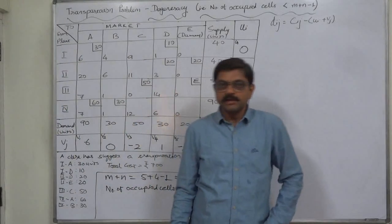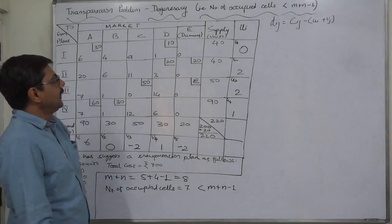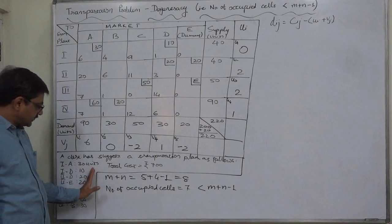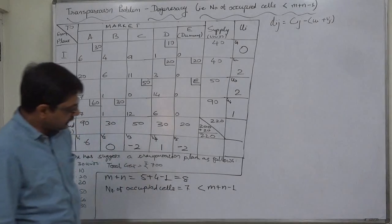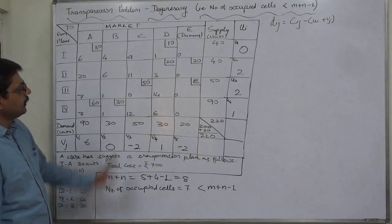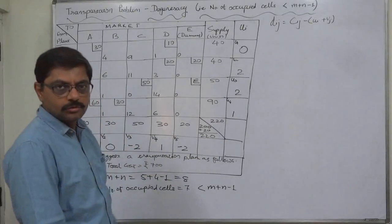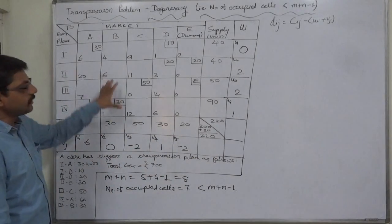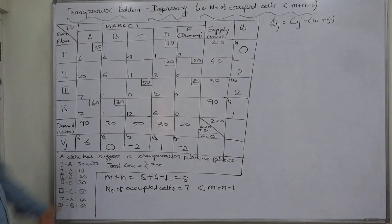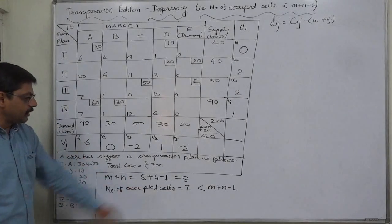Hello and welcome to Part 2 of the solution of a transportation problem having the situation of degeneracy. At the initial stage, the number of occupied cells is 7, which is less than m plus n minus 1, that is 8 — number of columns plus rows: 5 plus 4 minus 1 equals 8. There must be at least 8 occupied cells, but in the initial solution there are only 7.